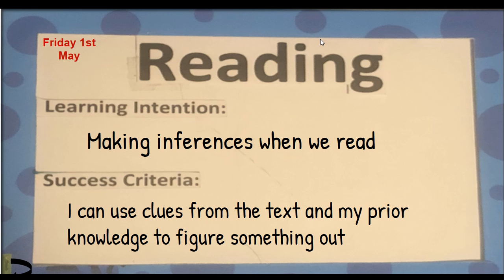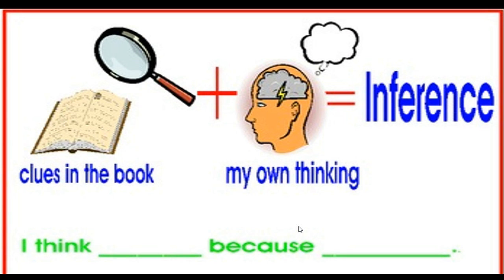Our learning intention: making inferences when we read. Success criteria: I can use clues from the text and my prior knowledge to figure something out. What's an inference? Using clues and what we know to figure something out. So, I think something because something. You need to make sure you're giving evidence — use the clues and your prior knowledge to say why you thought that.